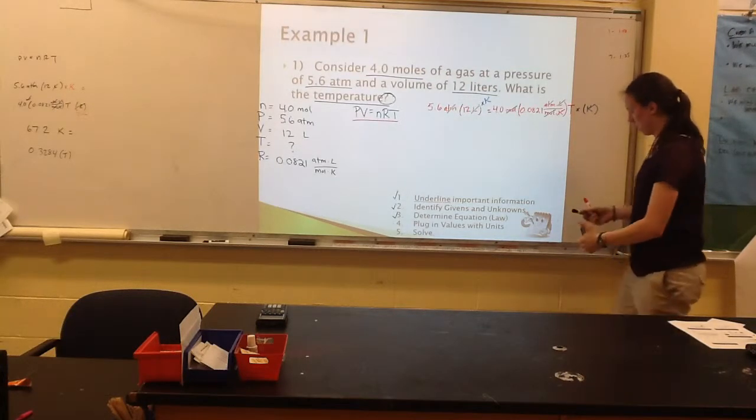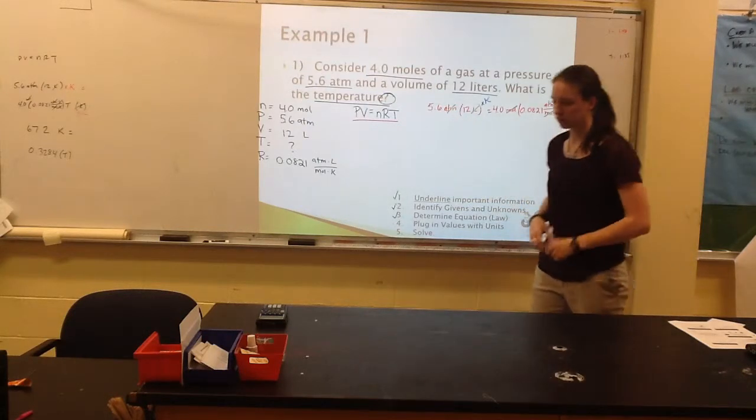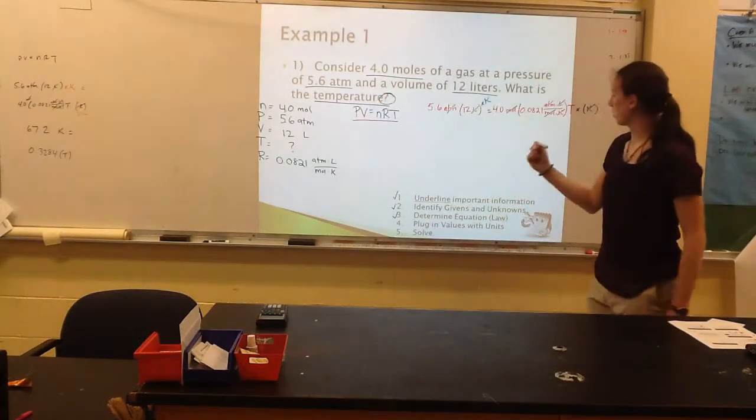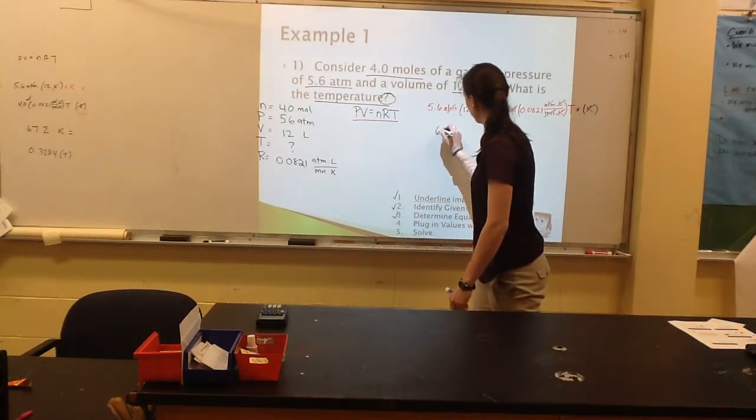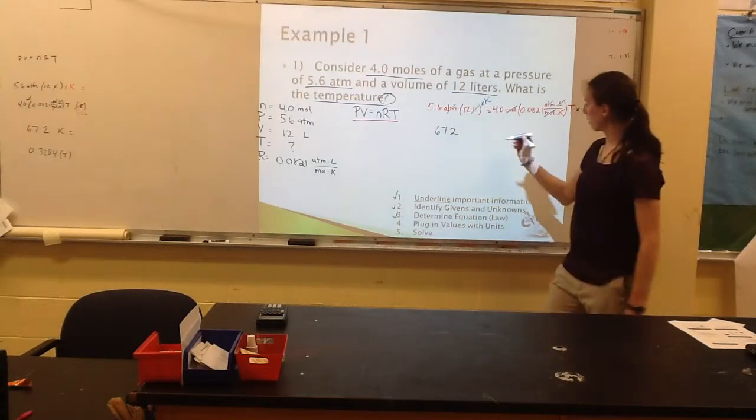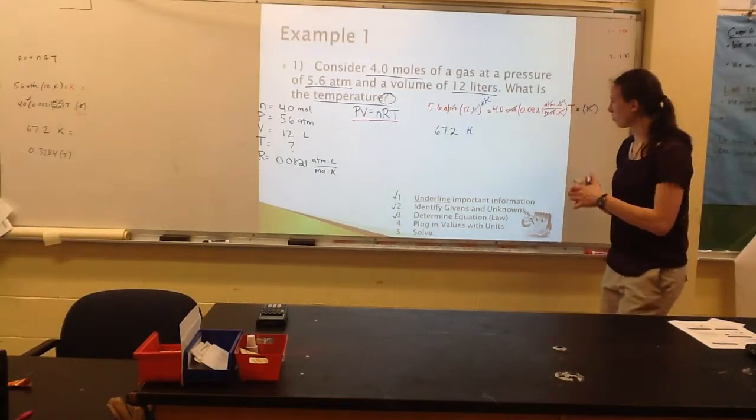So now let's do this math. I've got 5.6 times 12. I go to my calculator, and I end up with 67.2. Notice we've got Kelvin here. So 67.2 Kelvin.